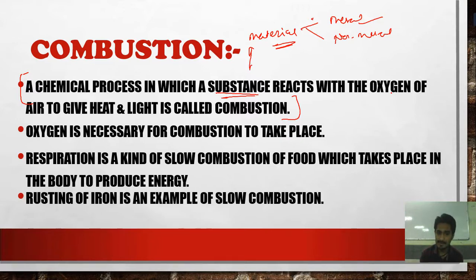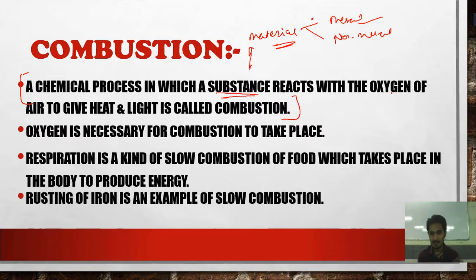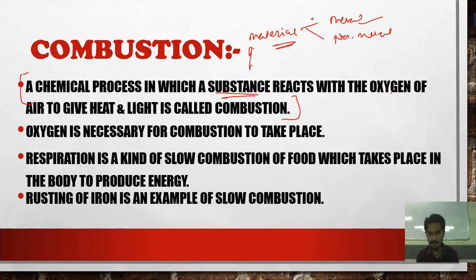The rusting of iron is also an example of slow combustion. Slow combustion is a process that takes a long time. When iron is exposed to moisture and atmosphere, it rusts — but not immediately; it takes two to three months day by day. So this gradual process is called slow combustion.